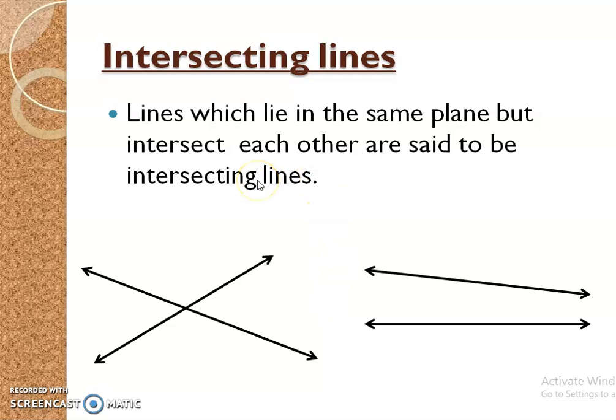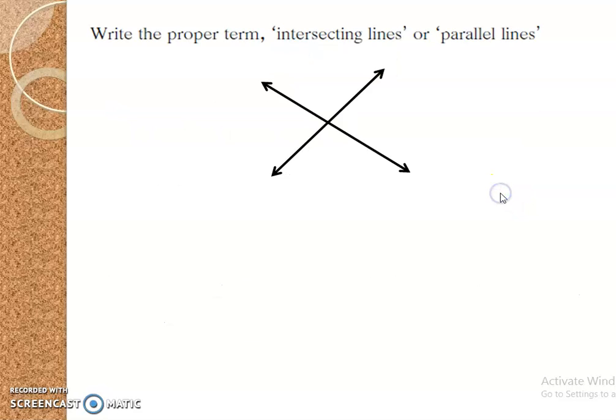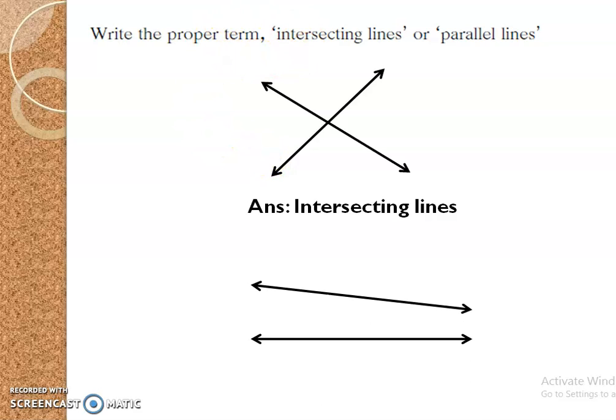Intersecting lines: The lines which lie in the same plane but intersect each other are said to be intersecting lines. Write the proper term, intersecting lines or parallel lines. See the figure. The figure is of intersecting lines. See the second figure. This is also of intersecting lines.